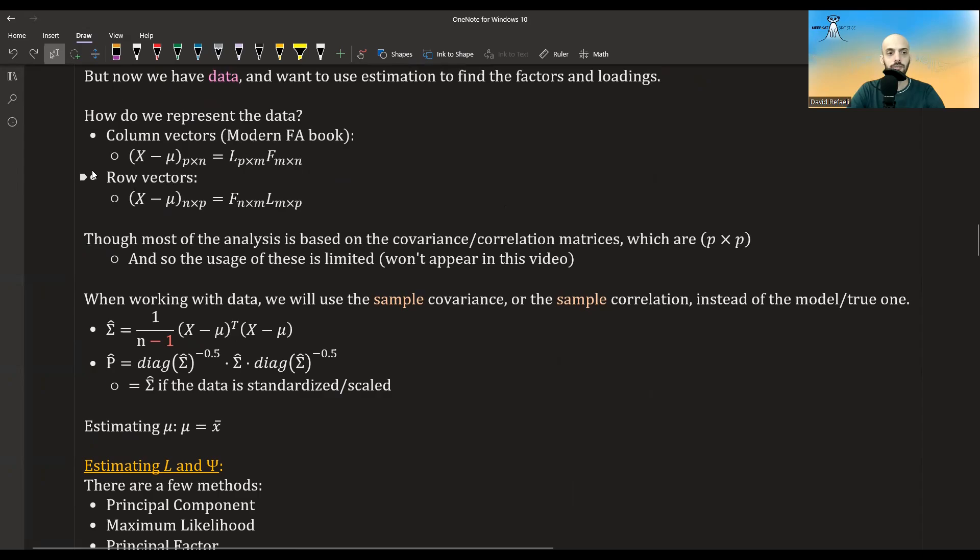Or we can do row vectors, and then X minus mu will be an N by P, so each row is a P dimension row vector and we have N rows, and then F will be N by M and L will be M by P.